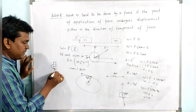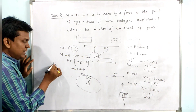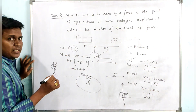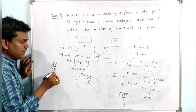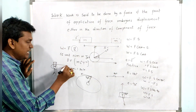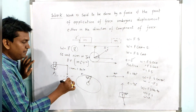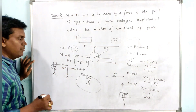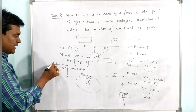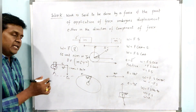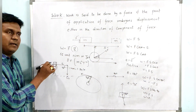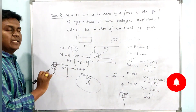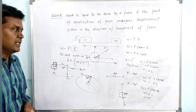Another example: a porter (coolie) carrying a heavy load and walking. The displacement is horizontal and the direction of gravity is vertically downward — the angle is 90 degrees, so the work done by gravity is zero. However, the porter is doing positive work because he applies force to carry the load and the load undergoes displacement. So work done by him is positive, but work done by gravity is zero.